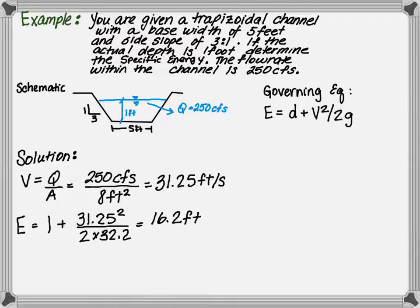We calculate the velocity as the flow rate divided by the area. The area was determined in the previous problem to be 8 square feet. The velocity as a result is 31.25 feet per second. Please note, this is a very high velocity. The minimum energy is the depth of 1 foot plus the velocity head, resulting in a specific energy of 16.2 feet.